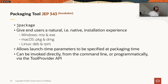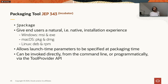JEP 343 introduces the new packaging tool jpackage, currently in incubation in JDK 14. It gives you the ability to create native installers specific to a given platform: MSI or .exe on Windows, .pkg or .dmg on macOS, and so on. It has additional native features such as passing parameters to the installer executable, and it works with jlink. This lets you create self-contained native installers for your Java applications today.